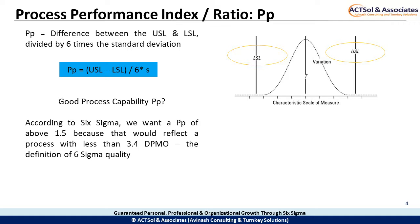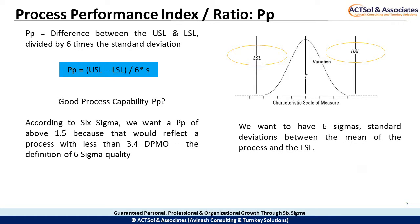How do we come to that? We want to have 6 sigma standard deviations between the mean of the process and the LSL. Since a normal distribution is symmetric, that means we also want 6 sigma between the mean and the USL — that's a total of 12 sigma between the USL and LSL. In other words, USL minus LSL should equal 12 sigma for us to reach 6 Sigma quality standards of 3.4 DPMO.